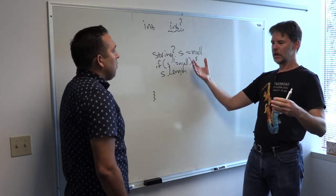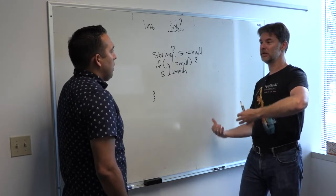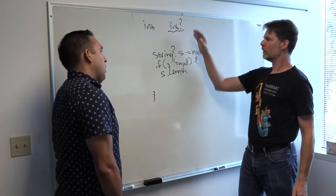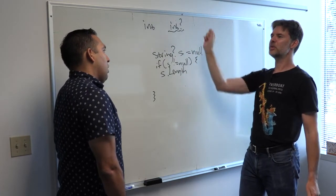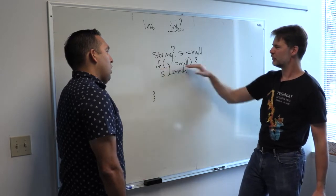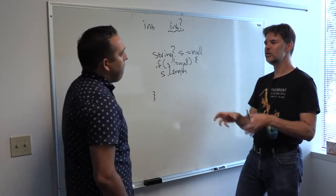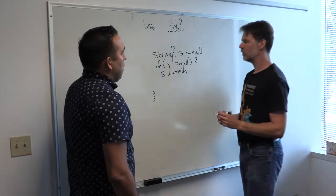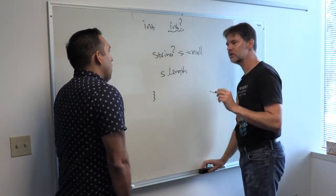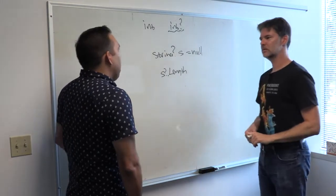Other languages use pattern matching to distinguish whether something is null, introducing a new non-null variable. But it was important for us to make a feature that fits well with code people already have. If you go through and add question marks where you intend things to be null, you want your existing null checking code — your ifs, your assignments — to be recognized. You want all that to count and make the compiler stop warning. We already have about seven different ways of checking for null, so the compiler should recognize most of them.